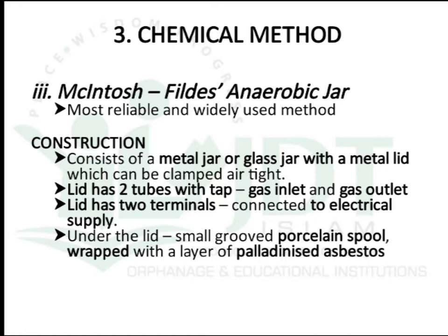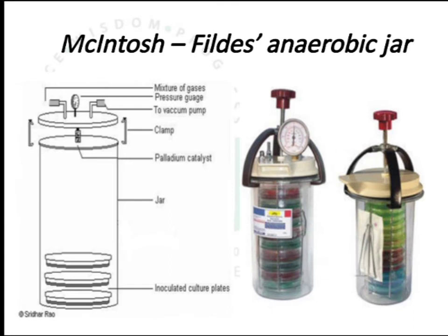The McIntosh field jar consists of a metal or glass jar with a metal lid which can be clamped airtight. There are two tubes on the lid: one for gas inlet and one for gas outlet. There are also two terminals on the lid which can be connected to an electric supply. Under the lid, there is a small grooved porous spool wrapped with a layer of palladinized asbestos. In the picture, we can see the glass or metal jar with a metal lid, gas inlet, gas outlet, electrodes, and the palladinized catalyst.